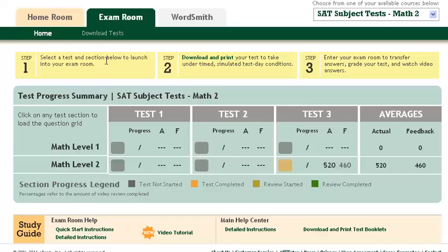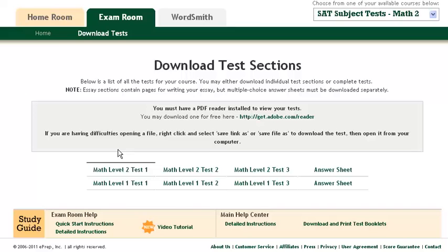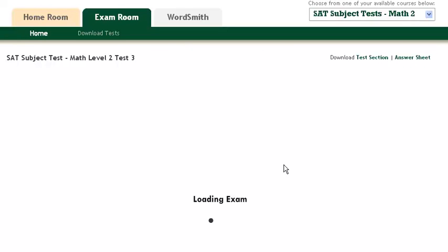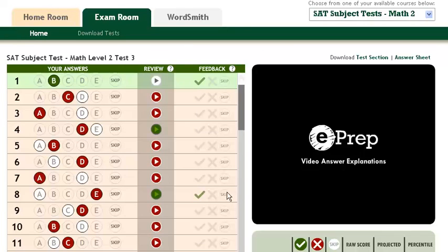Now here in the exam room is where your tests are. If you want to download the test, you can click here and it will take you to the tests. For example, Math Level 2 Test 1, Math Level 2 Test 2, Test 3, etc. You download the answer sheet, take the test offline, and then you go back into the exam room and select the test you took. For example, let's go to Math Level 2 Test 3.